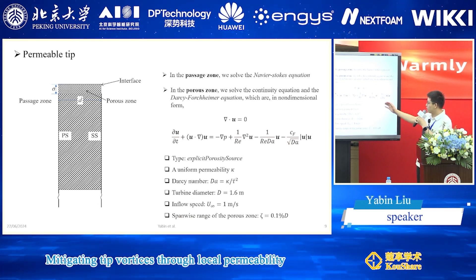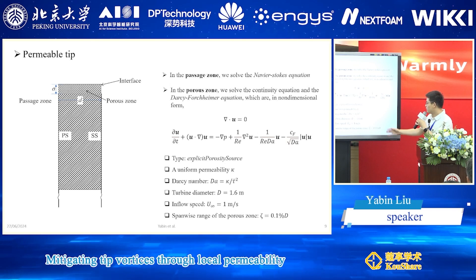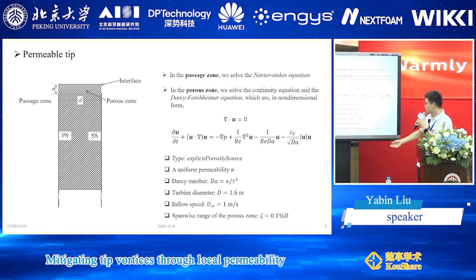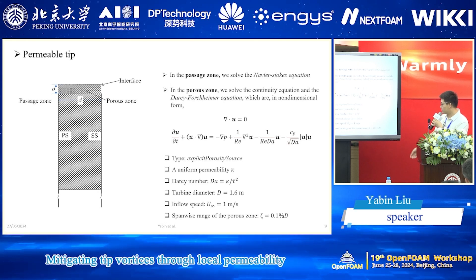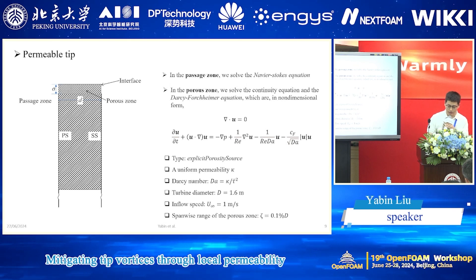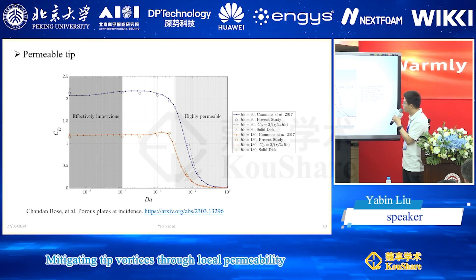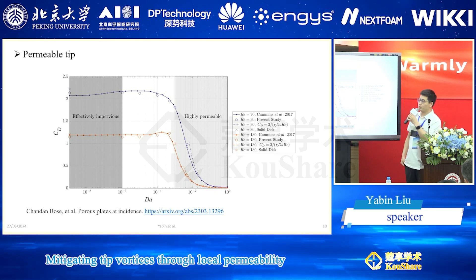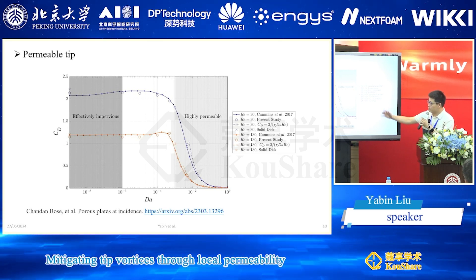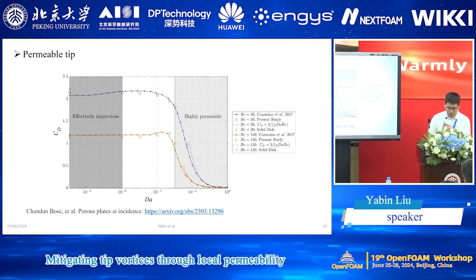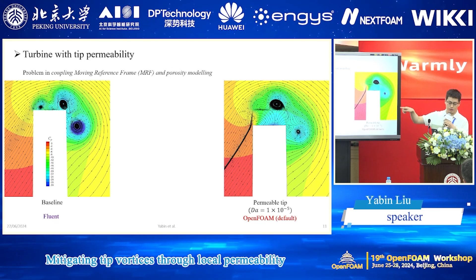We set a uniform permeability based on the blade tip thickness, and the permeability value defines the Darcy number. The porous zone is only 0.1% of the turbine diameter. We also validated on a 2D porous disk with the porous medium model, getting generally good agreement. Starting from this point, we wanted to see whether this would work with the turbine with the permeable tip.